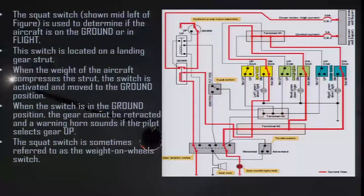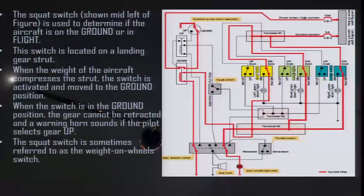The squat switch is used to determine whether the aircraft is on ground or in flight. This switch is located on a landing gear strut. When the weight of the aircraft compresses the strut, the switch is activated and moves to the ground position. When the switch is in the ground position, the gear cannot be retracted, and a warning horn sounds if the pilot selects the gear up. The squat switch is also sometimes called the weight-on-wheels switch.